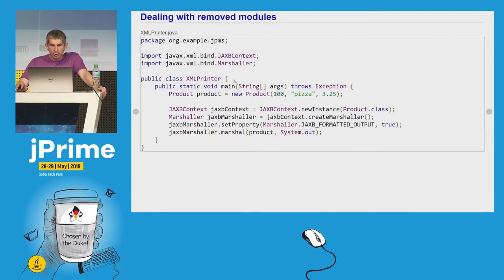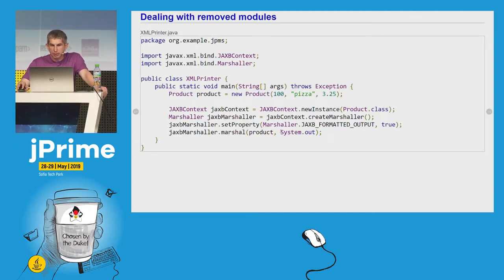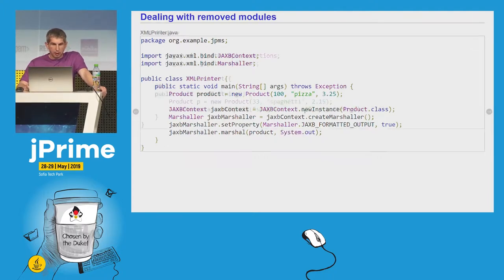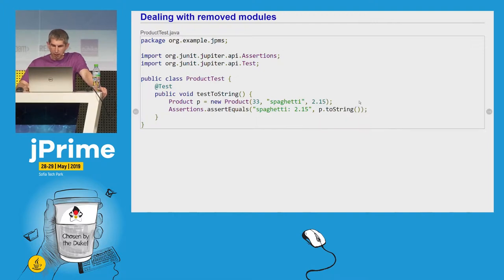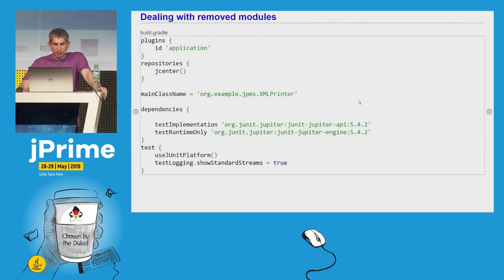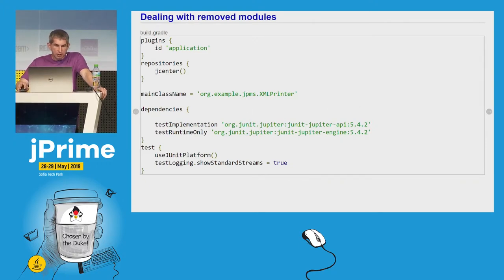The main method creates a new instance of the product class, it marshals it, and then prints its XML representation to the standard output. For the sake of completeness, we also have a unit test class for our product. There is not much to test on this product class, so I only check if the toString method works as expected. We build everything with Gradle, and this is our Gradle build script. Here I specify only the test dependencies on JUnit.